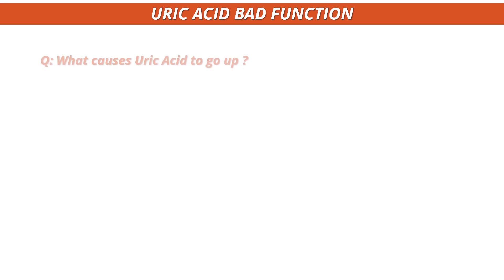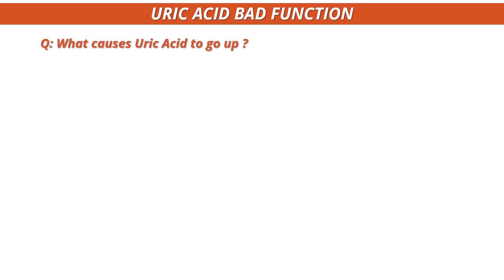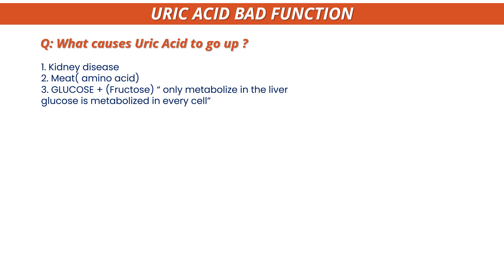What causes uric acid to go up? It's not one or two reasons — it's three. If you have kidney disease, your body won't be able to break it apart and excrete it. If you consume a lot of meat, or a lot of fructose — fructose is the sweet part of sugar — that raises uric acid. Glucose is metabolized by every cell in your body, but fructose is only metabolized at the liver.